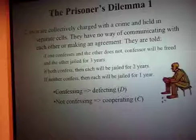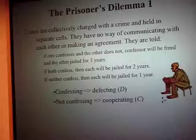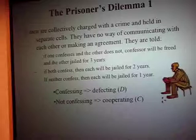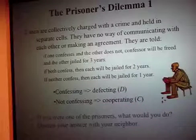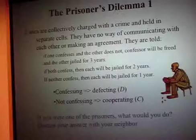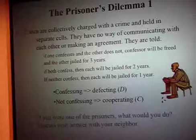To build such a strategy we consider one well-known problem: the Prisoner's Dilemma — maybe you've heard about it. Basically the problem says that two men are collectively charged with a crime and held in separate cells with no way of communicating or making an agreement. They are told that if one confesses and the other doesn't, the confessor will be freed and the other jailed for three years; if both confess, each will be jailed for two years; if neither confesses, each will be jailed for one year. The question is: if you were one of these prisoners, what would you do — confess or cooperate?